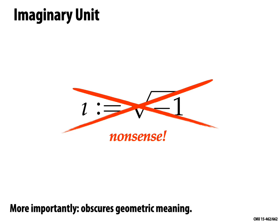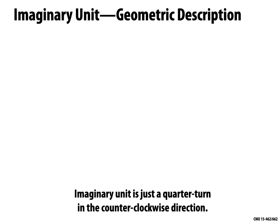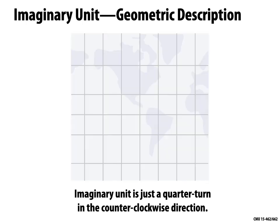Let me introduce to you for the very first time the imaginary unit. The imaginary unit is just another name for a quarter turn in the counterclockwise direction. So for instance, if I start with this vector — which I'll give the name 'one' — and I multiply it by i, I get a 90-degree rotation in the counterclockwise direction. I get a vector that I'll call i. Why not? Because i times one is i.